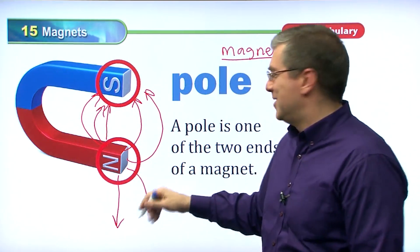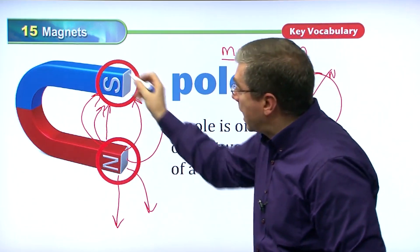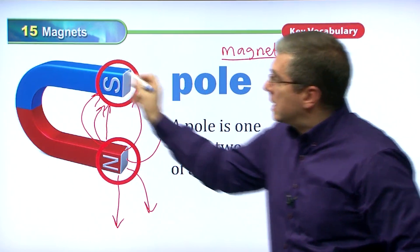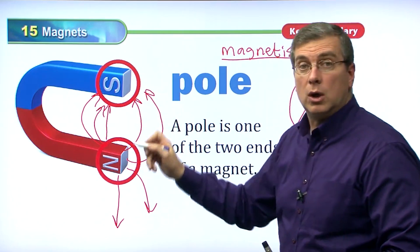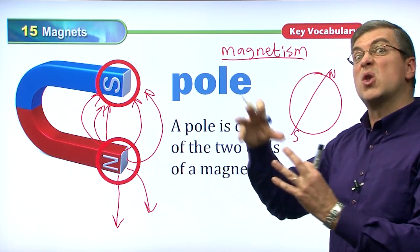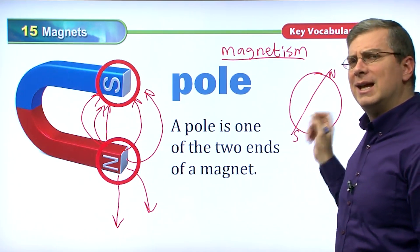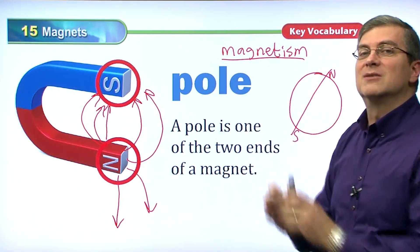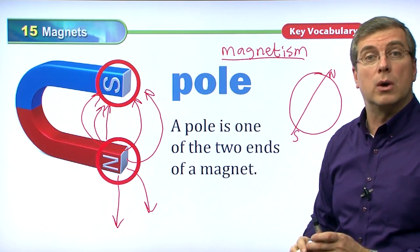The north is emitting the magnetism — the force — and the south is attracting it, picking it up. Whether it's a horseshoe shape or a bar shape, that's how the force works. The earth is also a magnet, so we have a north pole and a south pole on the earth, and that's how people long ago could find out which way was north.